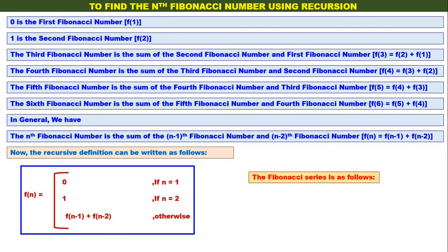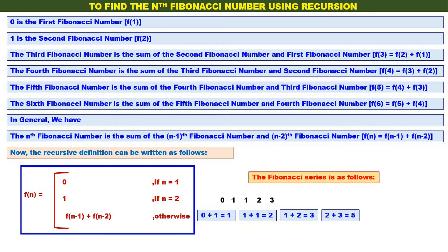Let us also understand the Fibonacci series. The first Fibonacci number is 0, the second is 1, the third is 0 plus 1 equals 1, the next is 2, the next is 1 plus 2 equals 3, then 2 plus 3 equals 5, then 3 plus 5 equals 8, then 5 plus 8 equals 13.